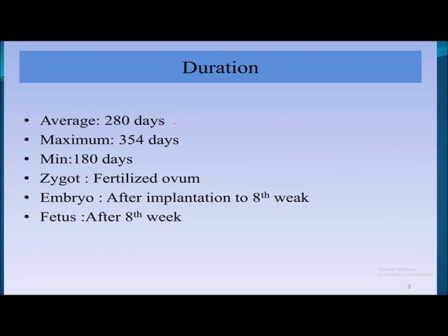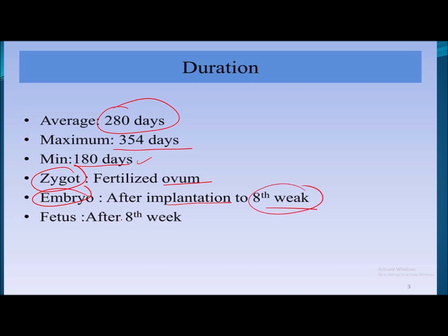The average duration of pregnancy is 280 days, maximum duration is 354 days, and minimum duration is 180 days. A zygote is the fertilized ovum. An embryo is the stage from implantation up to eight weeks, and after eight weeks it is known as a fetus.